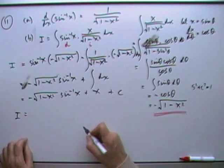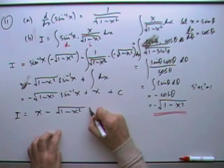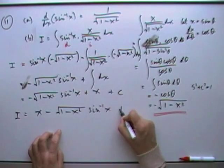Final answer, I'll just tidy that up. I'll make it, put that x first. x minus the square root of 1 minus x squared inverse sine of x plus c.